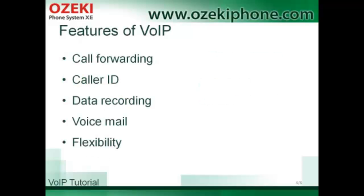Using an IP phone system has a number of advantages. For example, call forwarding allows you to forward incoming calls from your phone to any other one registered in the PBX. It simply means that, for example, you can forward incoming calls to your mobile phone if you are out of the office. Caller ID is another feature that allows you to know who is calling you, since the extension ID or the name of the caller is displayed on the phone.